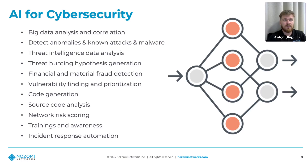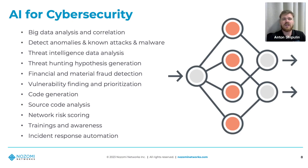The third domain is AI for cybersecurity — how AI and machine learning help increase the speed and accuracy of cybersecurity processes. Many solutions use AI under the hood; we just see the results. Applications include big data analysis and correlation, detecting anomalies and known and unknown attacks, threat intelligence analysis, threat hunting hypothesis generation, fraud detection, vulnerability finding and prioritization, code generation, source code analysis, network risk scoring, training and awareness, and incident response automation.